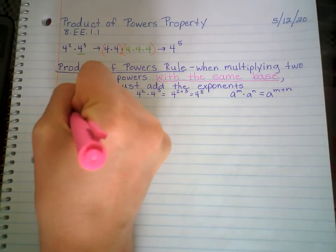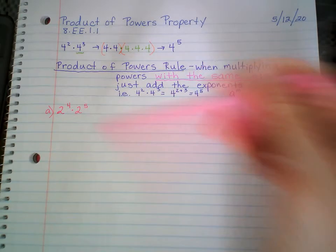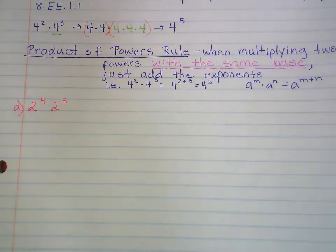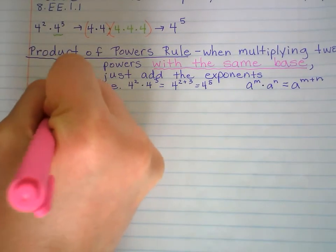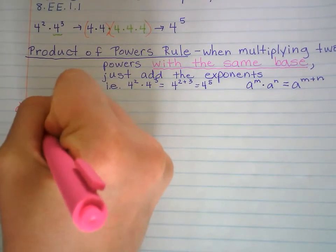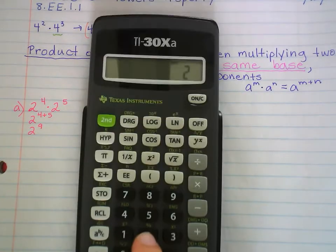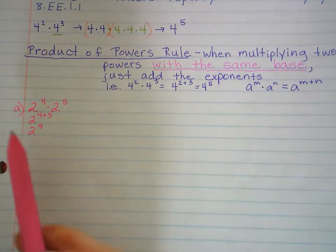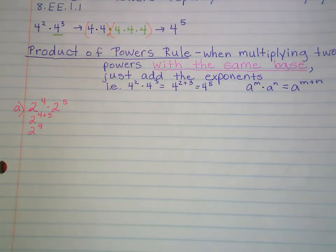2 to the 4th times 2 to the 5th. So we're multiplying 2 powers — 2 to the 4th, 2 to the 5th. They have the same base; they both have a base of 2. So all you have to do is add the exponents: 4 plus 5. So it's 2 to the 9th. We're just going to leave it like that because we're testing that you know that. You could compute 2 to the 9th — it's 512 — but we're just practicing: can you compress this? Do you know the product of powers rule?